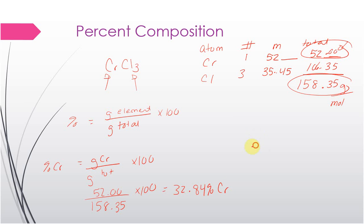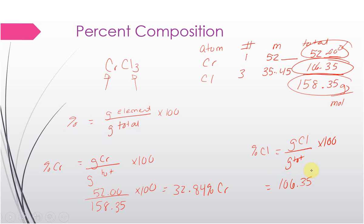For percent chlorine, we take the total mass of chlorine — not each individual chlorine — over the total mass of the compound times 100. So we use 106.35 over 158.35 times 100, which gives 67.16% chlorine. That's how you do that math.